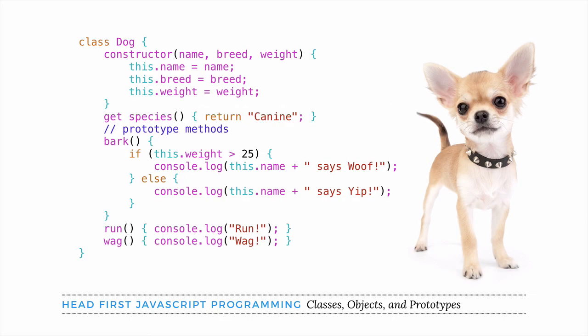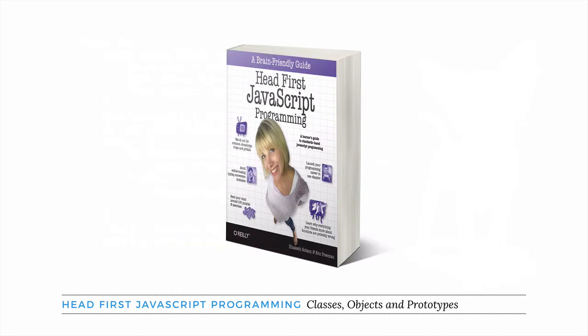That's how you use the class keyword to create objects in JavaScript. All current versions of modern browsers support the class keyword, so you can use it to program. Make sure that if you publish a web page using this new syntax, all your web visitors are using up-to-date browsers. If you're not sure, then you should stick with the old-fashioned syntax from JavaScript ES5 instead. If you need a refresher on creating objects and prototypal inheritance in JavaScript, check out Head First JavaScript Programming, and let us know if this was helpful and what else you'd like to learn from Wickedly Smart.